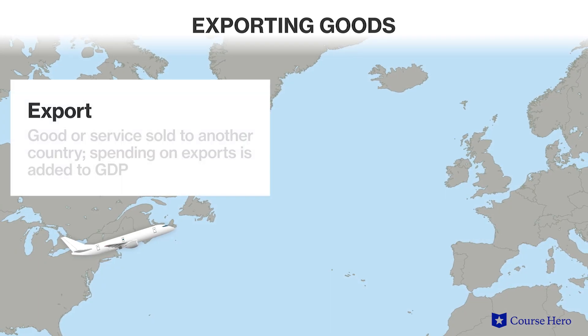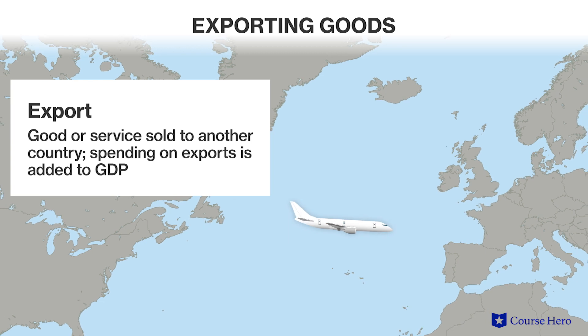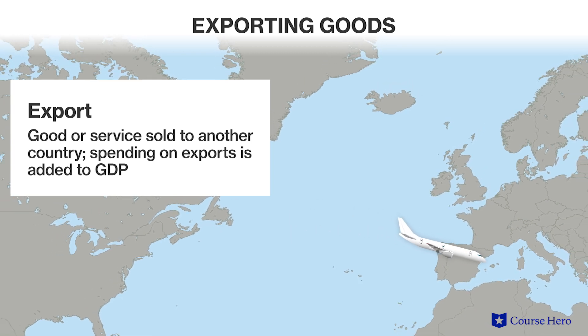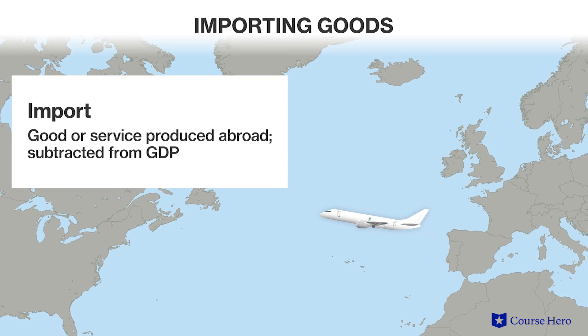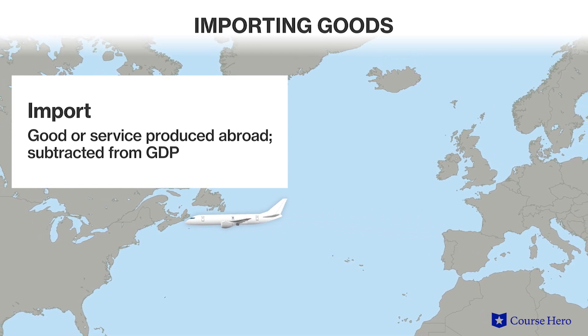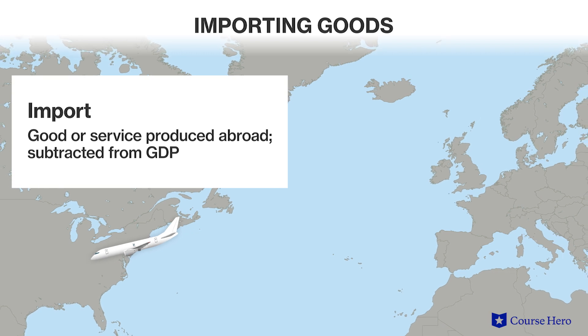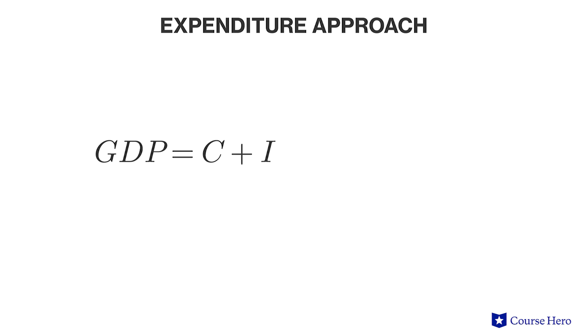An export is a good or service sold to another country and spending on exports is added to GDP. An import is a good or service produced abroad and bought domestically, but imports are subtracted from GDP because they're not produced in the country being counted. To calculate GDP using the expenditure approach, consumption is added to investment in physical capital, government spending, the value of exports, and then the remaining value of imports are subtracted. The difference between exports and imports is often combined and called net exports.